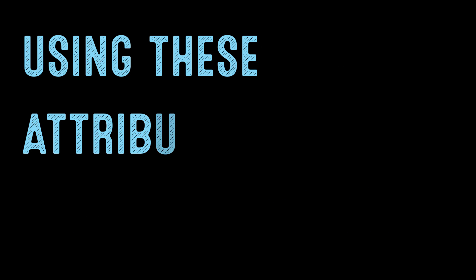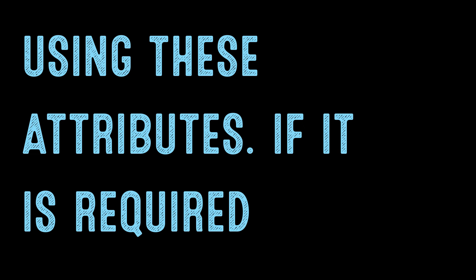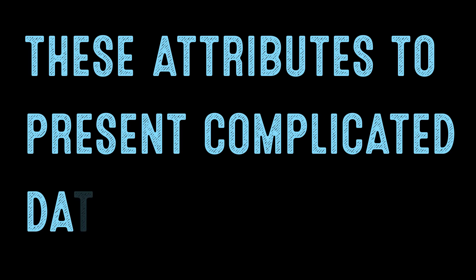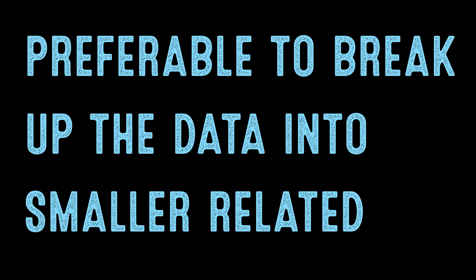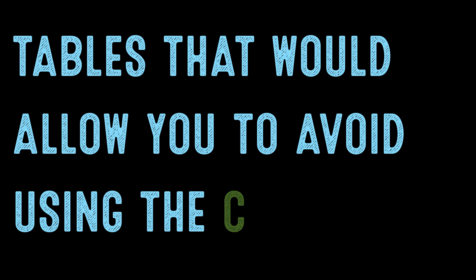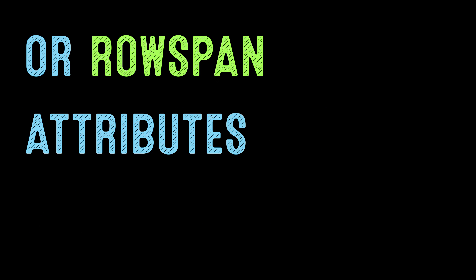To make a table more accessible, it is preferable to avoid using colspan and rowspan attributes. If these attributes are required to present complicated data, then it is preferable to break up the data into smaller related tables that would allow you to avoid using the colspan or rowspan attributes.